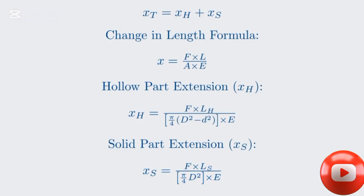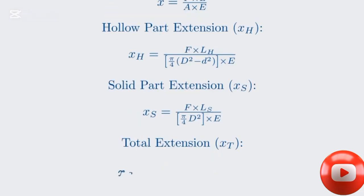Now, let's combine these into a single expression for the total extension and factor out the common terms. The total extension, xT, is the sum of these two expressions. We can factor out the term 4F divided by pi E from both parts, leaving us with a bracket containing LH divided by D squared minus d squared plus LS divided by d squared. This factored form makes the calculation more straightforward.